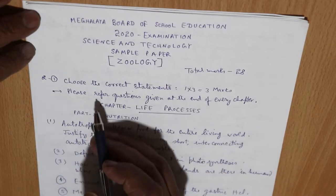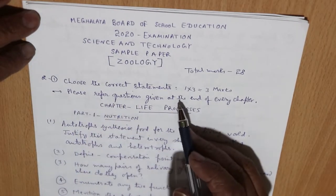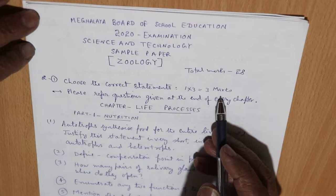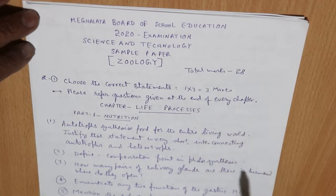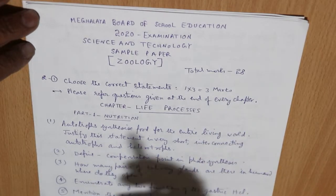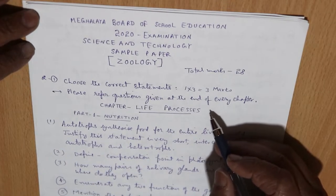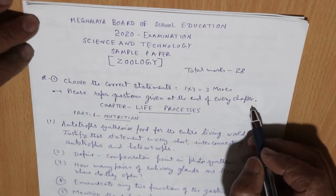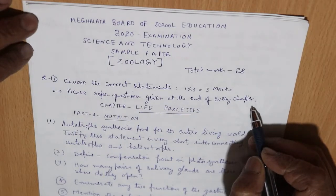As it was earlier, 'choose the correct statement' will be there — three questions of one mark each. All these questions you have to refer to the questions at the end of every chapter in your geology part of your science and technology book.